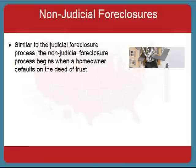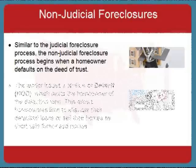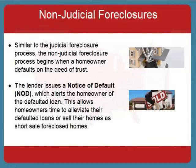The non-judicial foreclosure process begins when the homeowner defaults on the deed of trust. The lender issues the homeowner a notice of default. The purpose of this notice is to alert the homeowner of the default and of the lender's intent to foreclose on the house. The homeowner has time during this pre-foreclosure period to alleviate the debt. The homeowner may opt to pay the loan back in full, apply for loan modification, or file for bankruptcy. If these options are not possible, the homeowner may sell the home as a short sale — an agreement with the lender to sell the home for less than it is worth in order to pay back the defaulted loan.